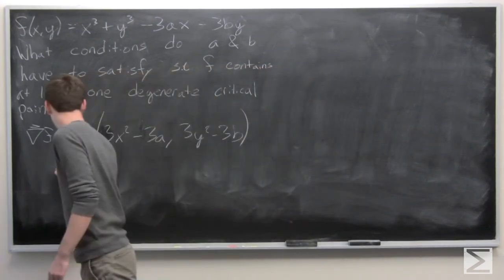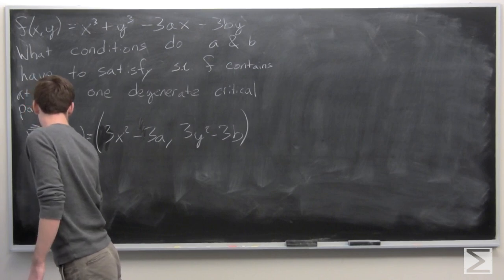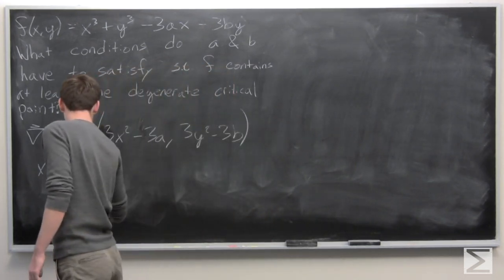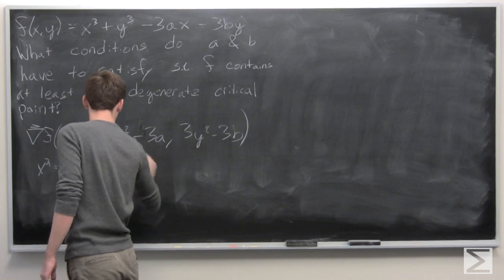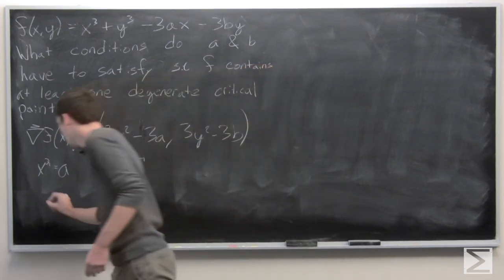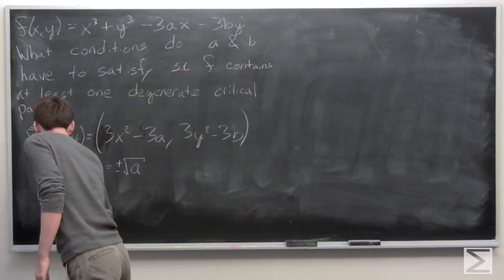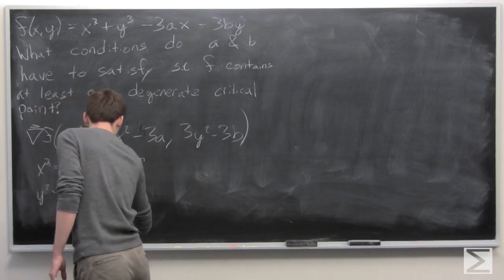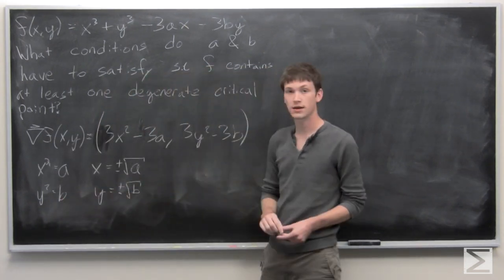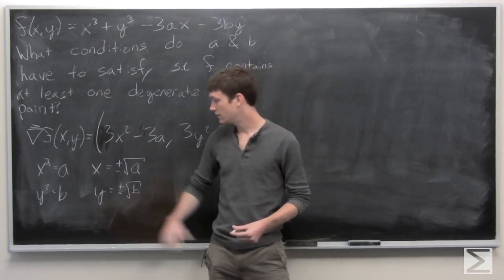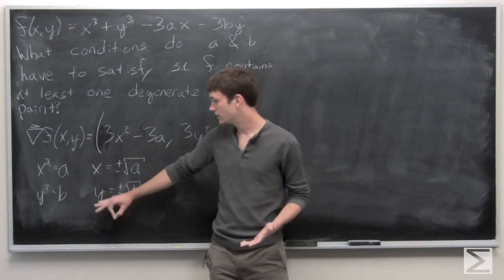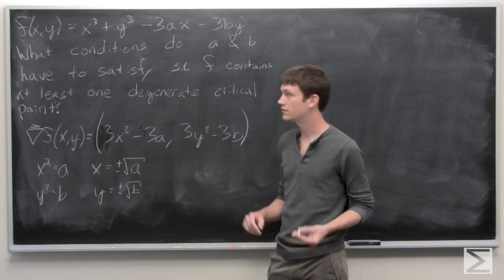Setting the first component equal to 0, we see that x squared is equal to a, so x is equal to plus or minus the square root of a. Similarly, we see that y squared is equal to b by setting the second component equal to 0, and solving for y, we get that y is equal to plus or minus the square root of b. These are where f attains a critical point.